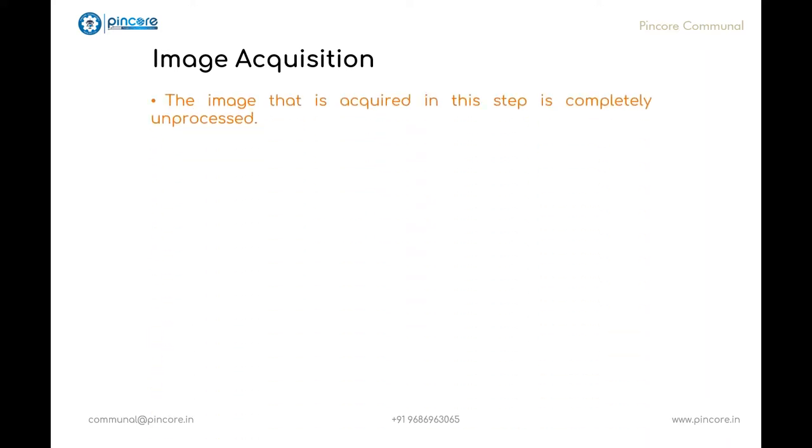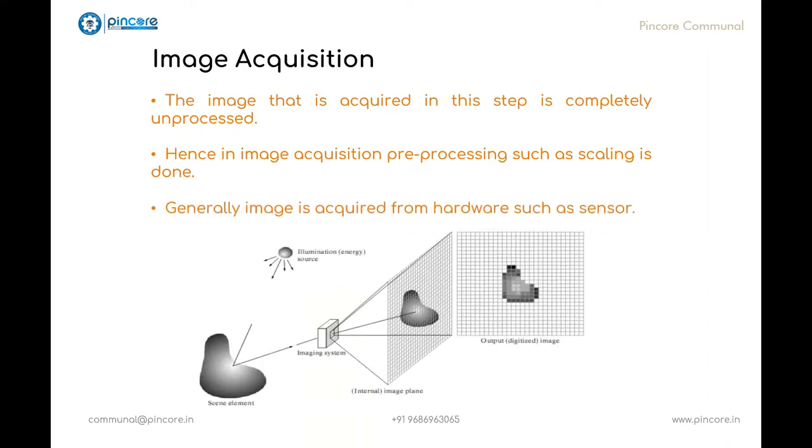Image acquisition is the first step in the process because without an image we cannot do any type of processing. The image that is acquired in this step is completely unprocessed. Hence in image acquisition preprocessing such as scaling is done. It could be as simple as getting an image in digital form. If it is not in digital form, we have to convert it using a digital converter. Hence it is used to retrieve or acquire an image from hardware source, generally from a sensor or from different cameras in digital image processing.